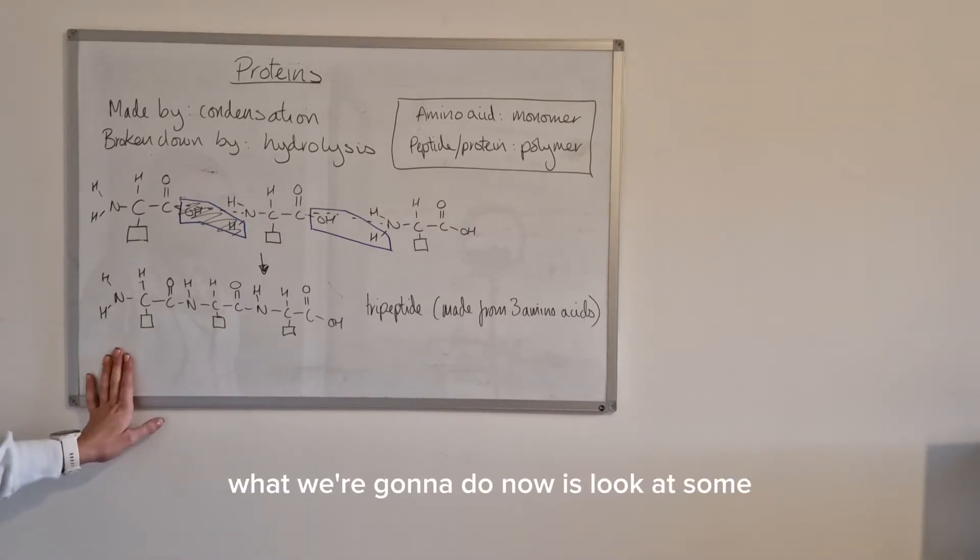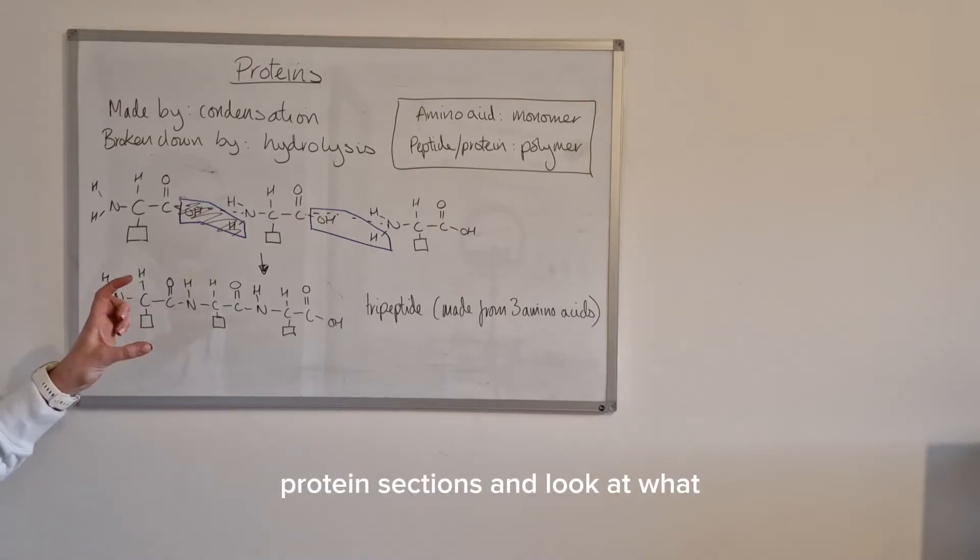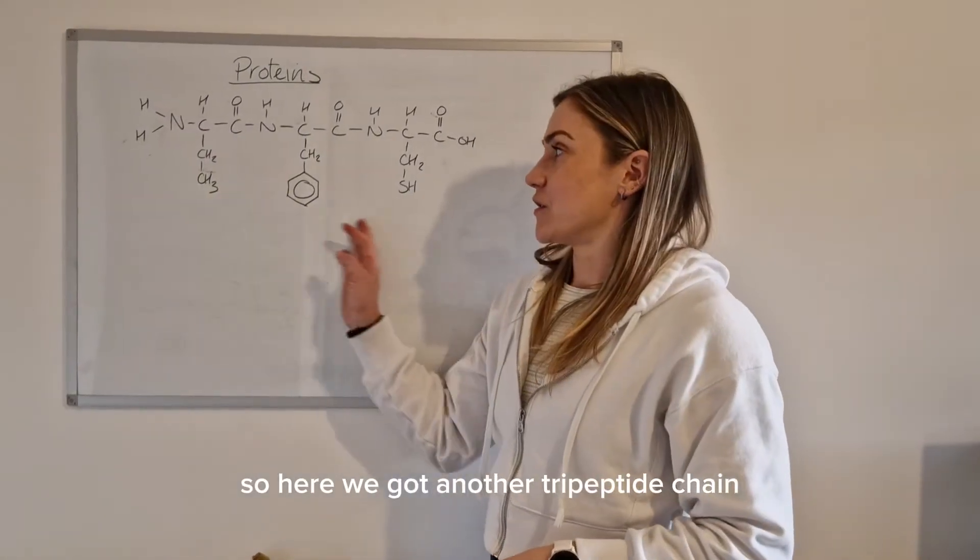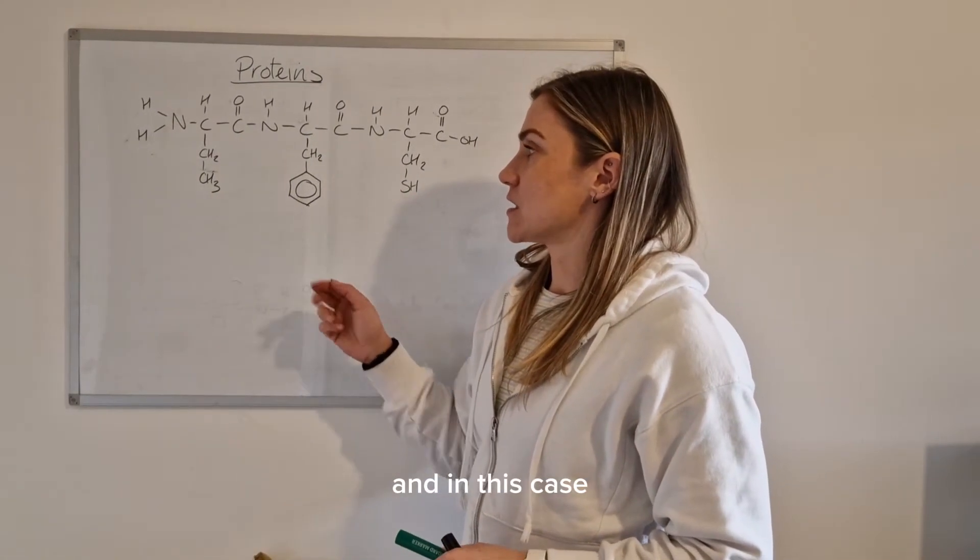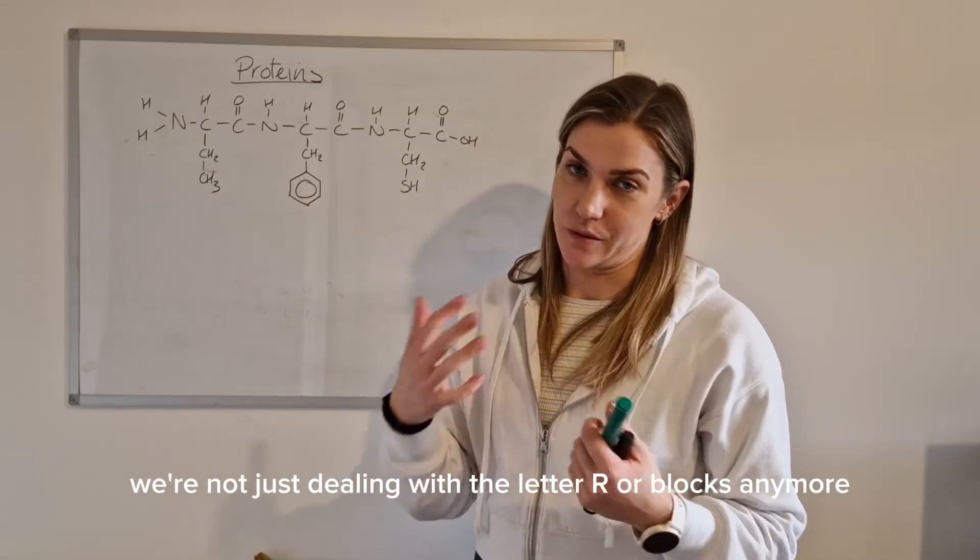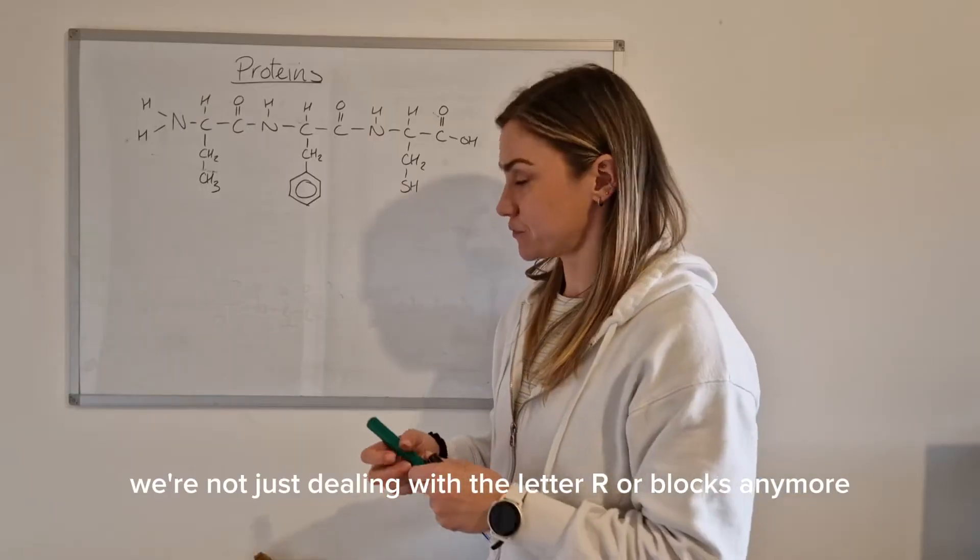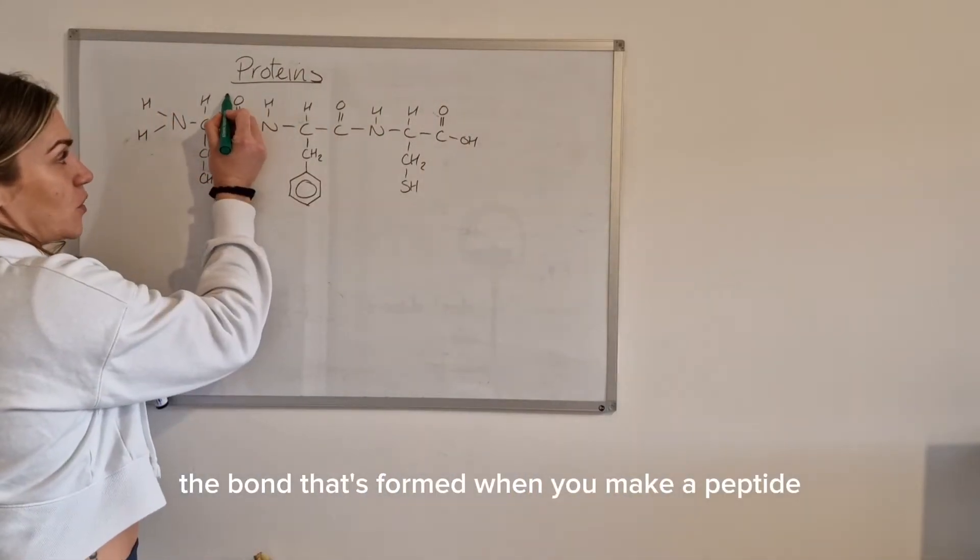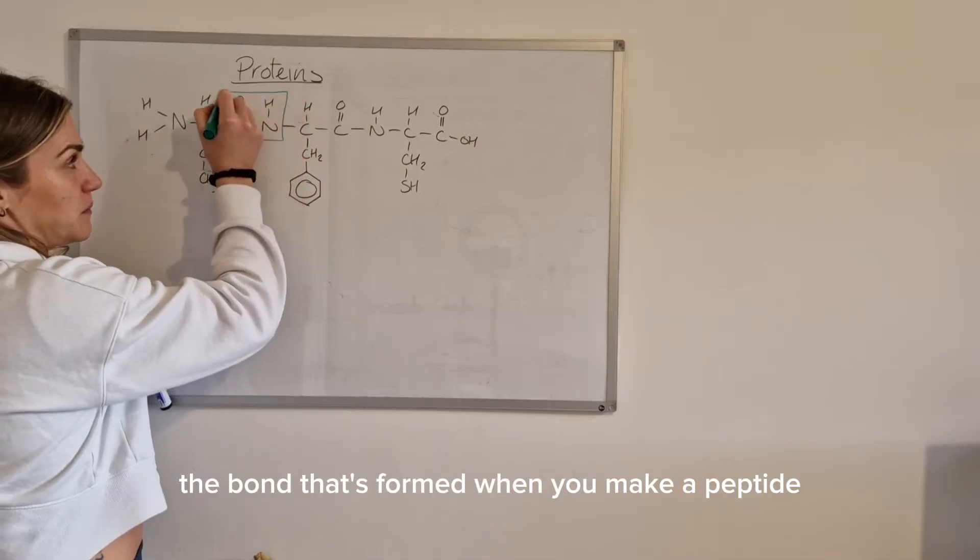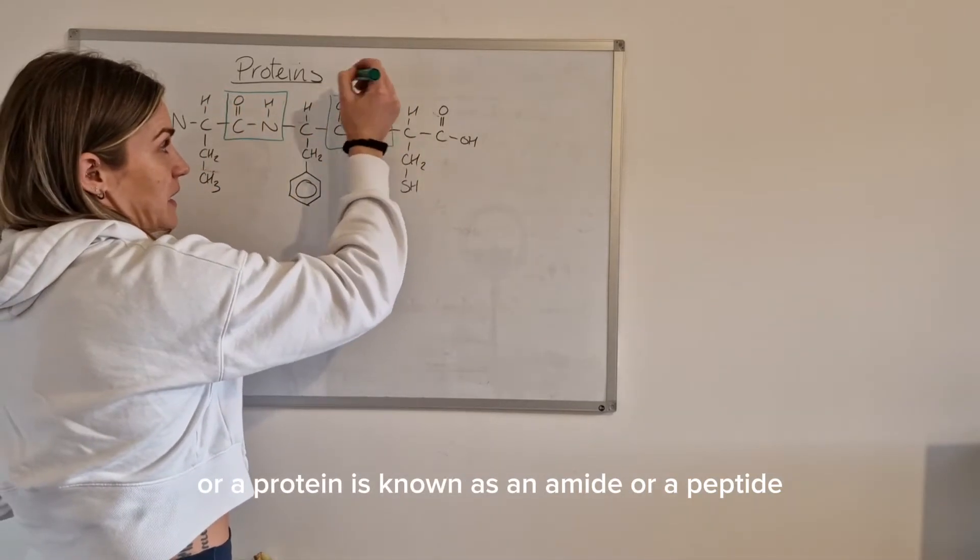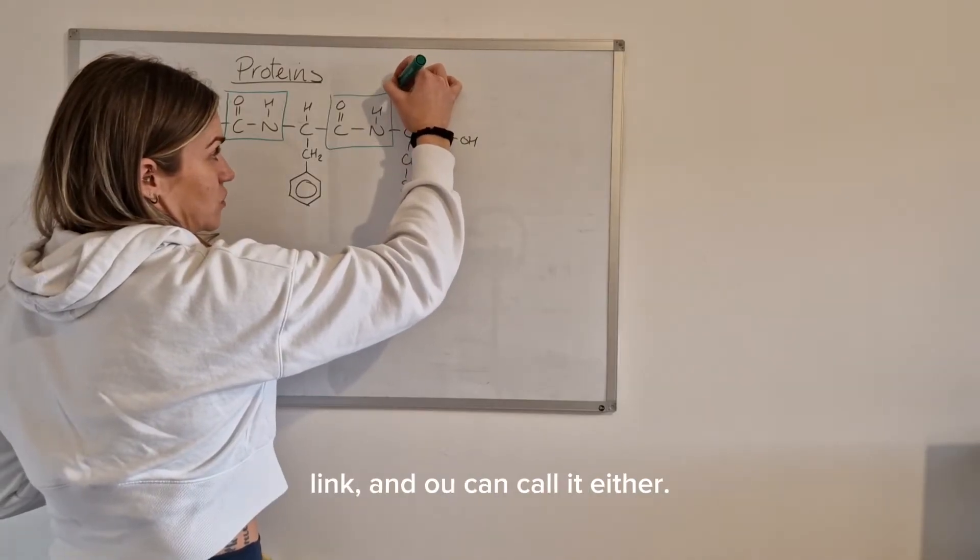What we're going to do now is look at some protein sections and look at what the hydrolysis of those would end up producing. Okay so here we've got another tripeptide chain and in this case I've actually added on some actual R groups so we're not just dealing with the letter R blocks anymore. Now I forgot to mention before, the bond that's formed when you make a peptide or a protein is known as an amide or a peptide link so you can call it either and that's the functional group in a protein.